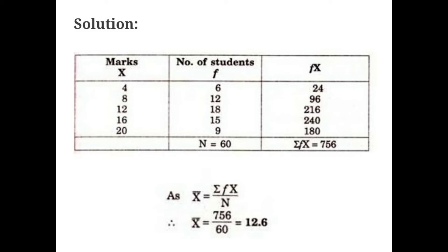Now let's substitute. You have to find fx. The marks column is x and the number of students column is f. Multiply f and x for each row: 4 × 6 = 24; 8 × 12 = 96; 12 × 18 = 216; 16 × 15 = 240; 20 × 9 = 180.